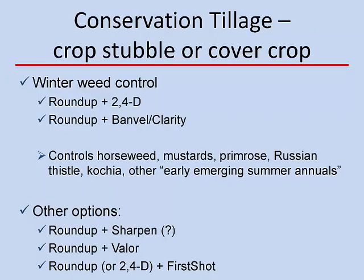Burndown can be accomplished by a variety of herbicides such as Roundup plus 2,4-D, Roundup plus Clarity, and a number of other Roundup combinations that include herbicides like Sharpen, Valor, and First Shot. It's very important to point out that some of these herbicides have fairly lengthy residual activity in the soil, so it's important to pay attention to the plant-back restrictions. With Sharpen, we shouldn't be planting cotton until at least 42 days after application as a pre-plant burndown treatment, and those 42 days start following an inch of irrigation or rainfall.